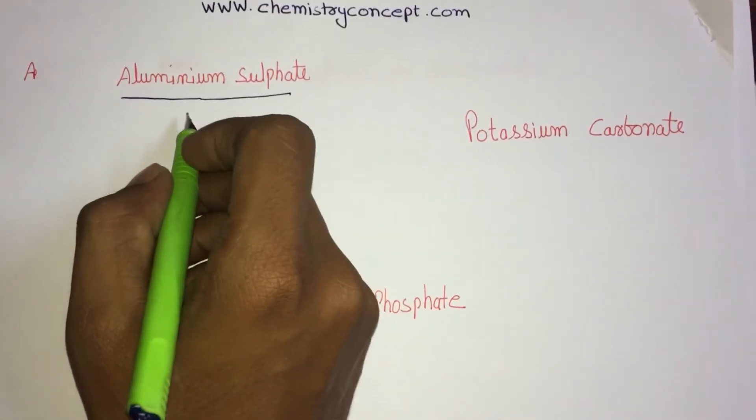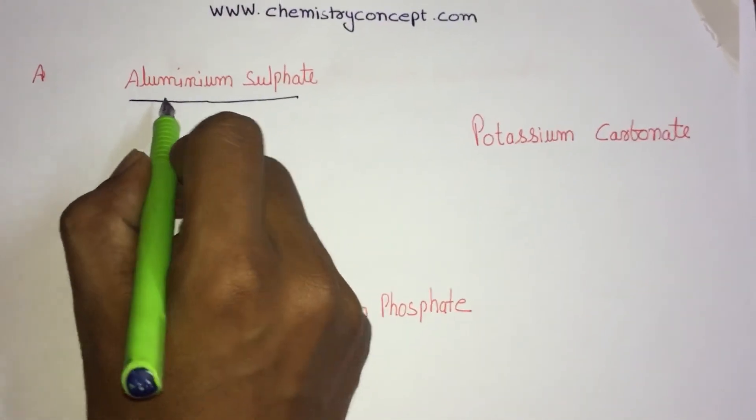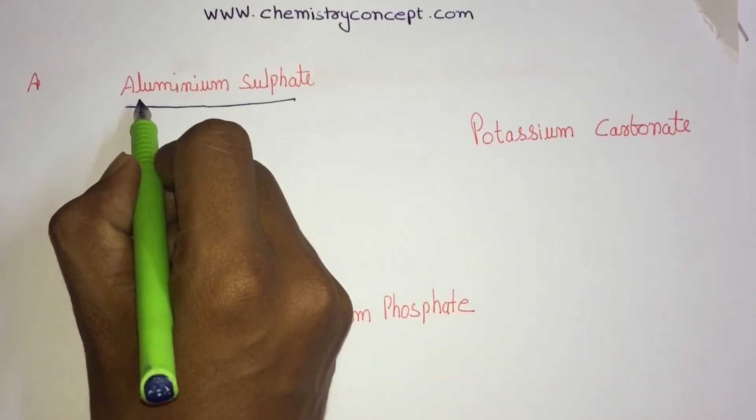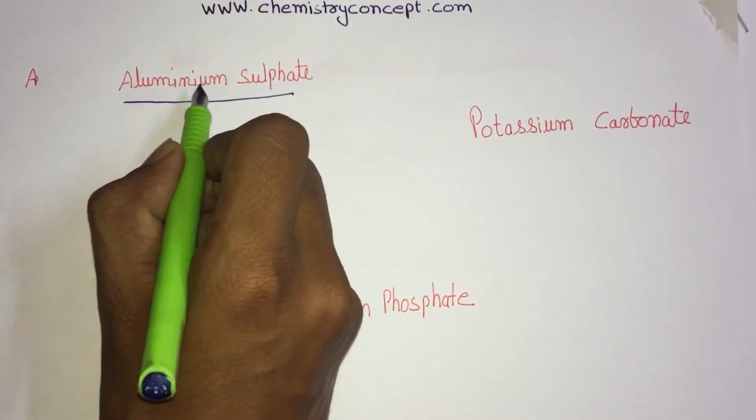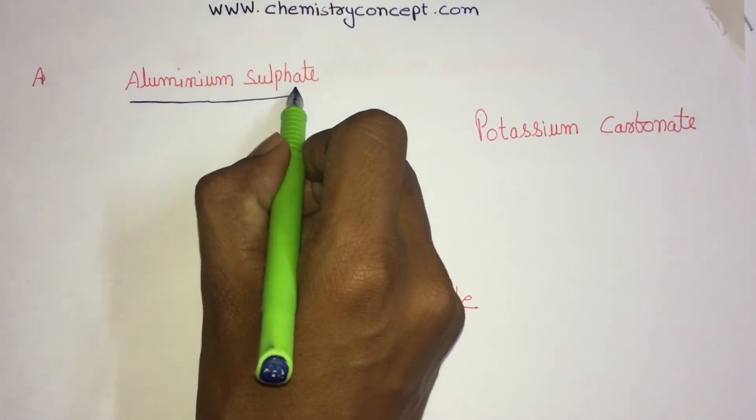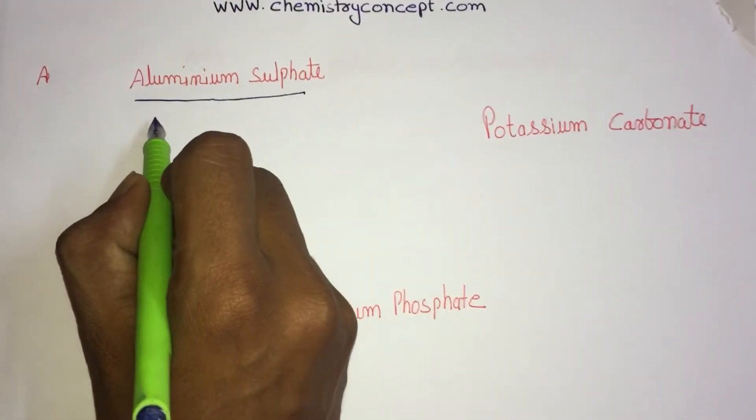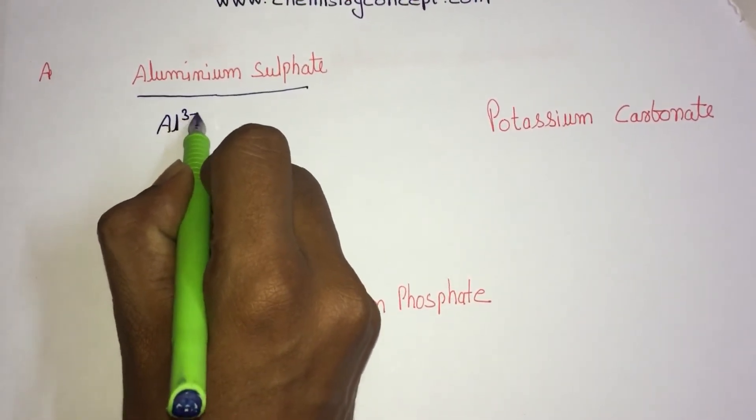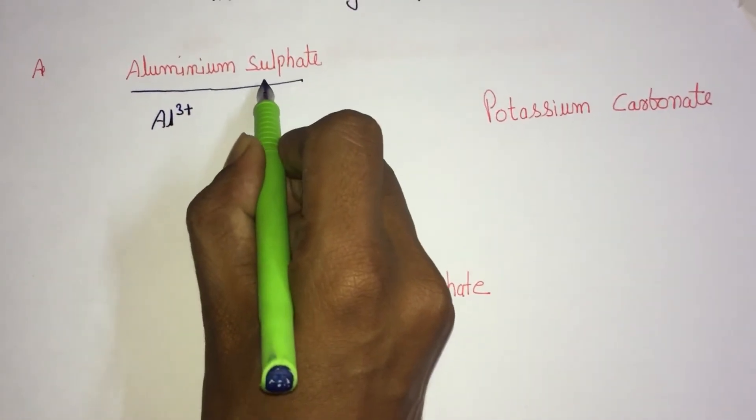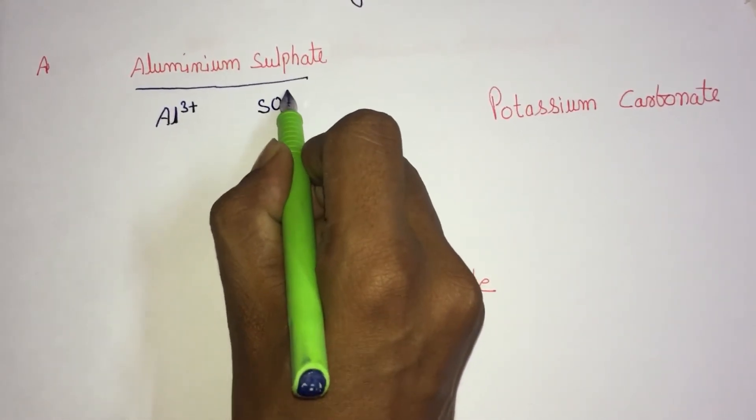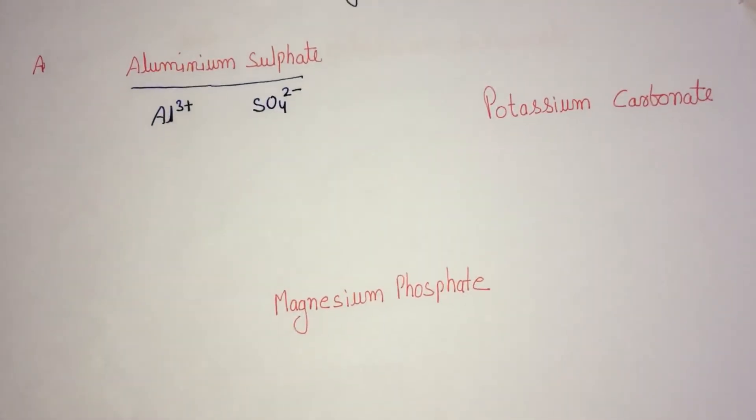There are two parts of any salt: first is cation, second is anion. If I want to write the formula of aluminum sulphate, I must know the formula of aluminum cation and sulphate anion. Aluminum is Al3+ and sulphate ion is SO4 2-.